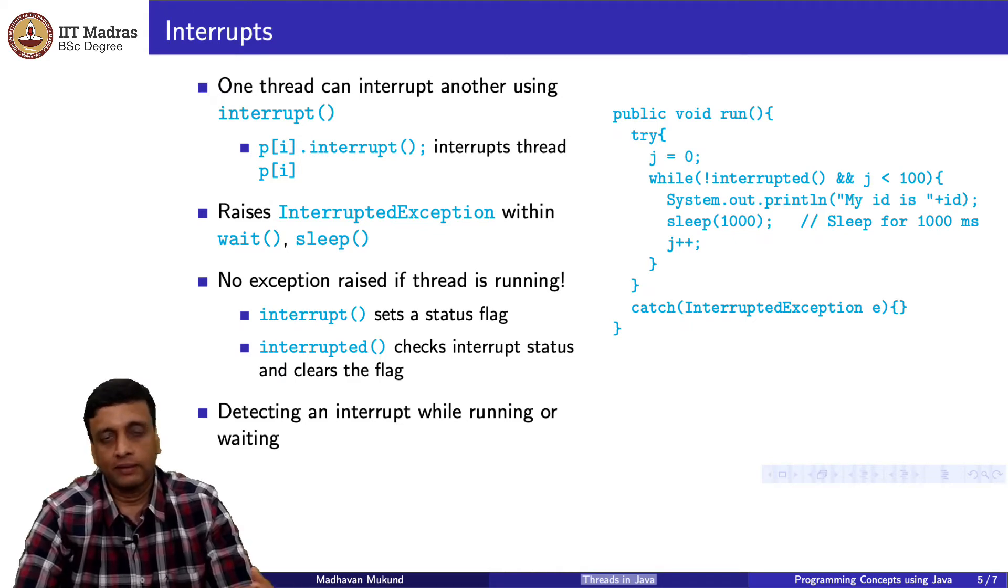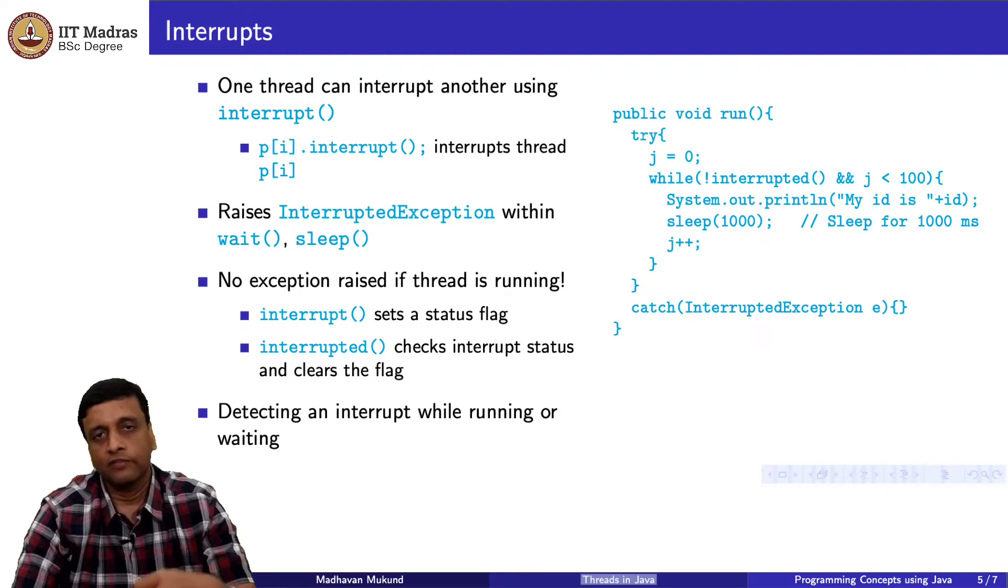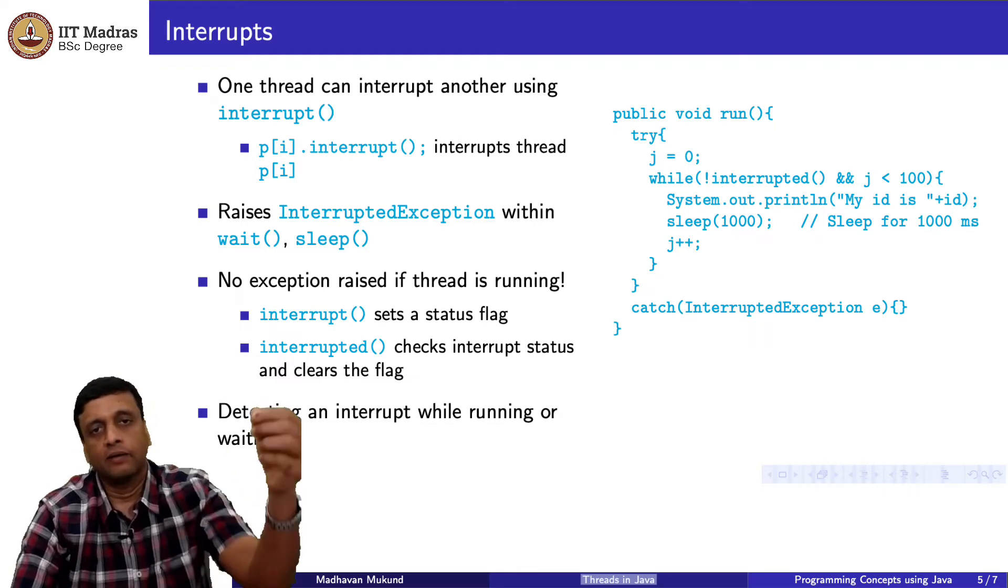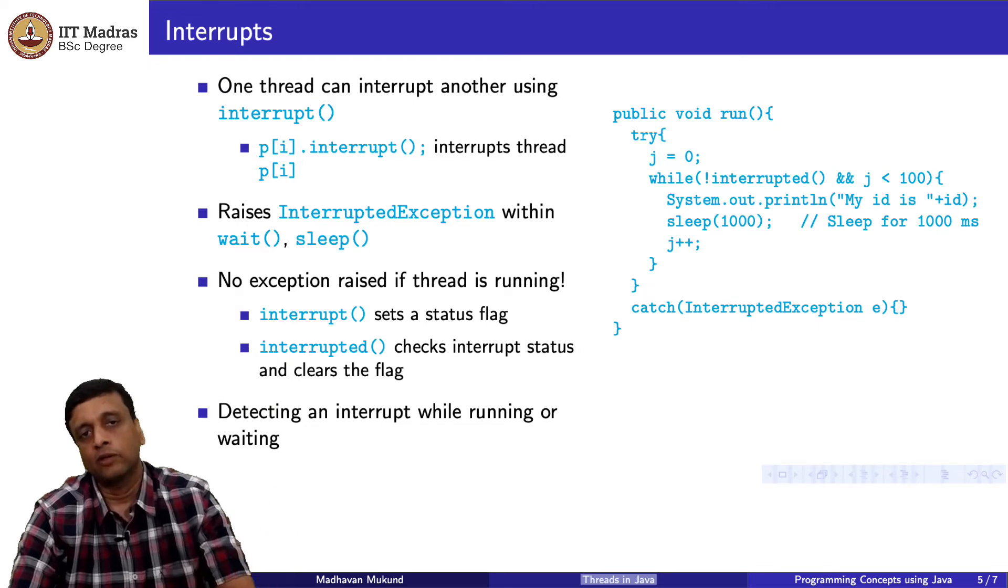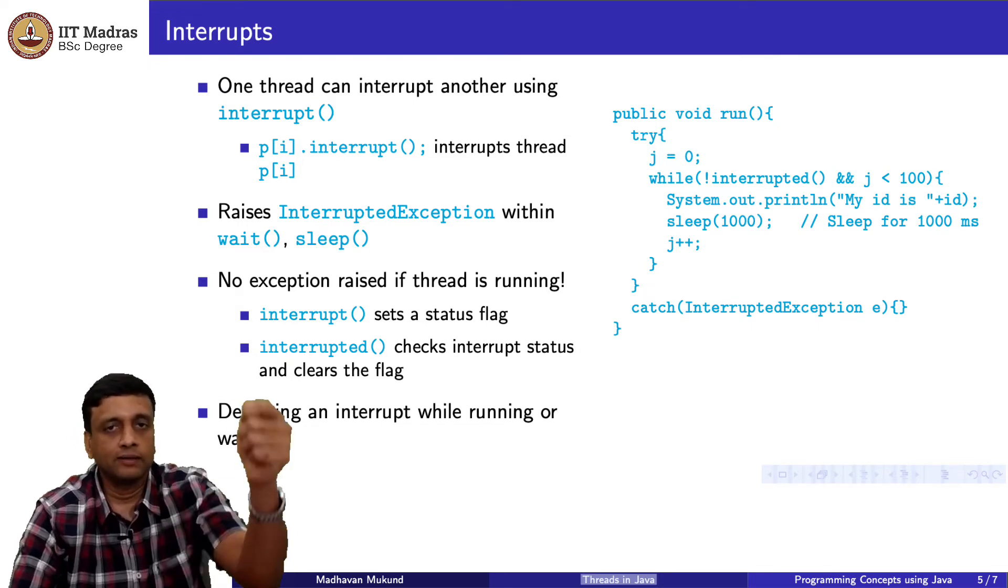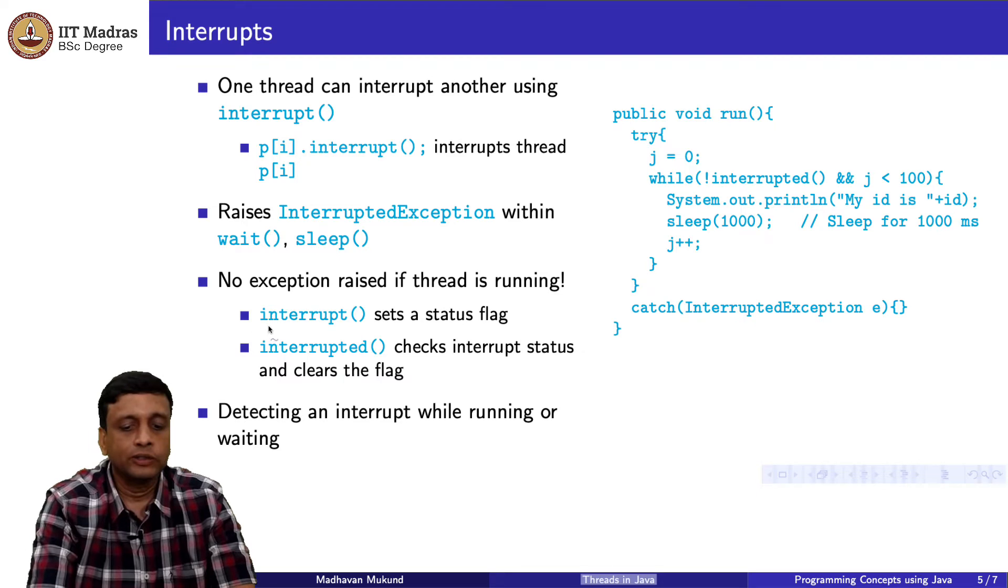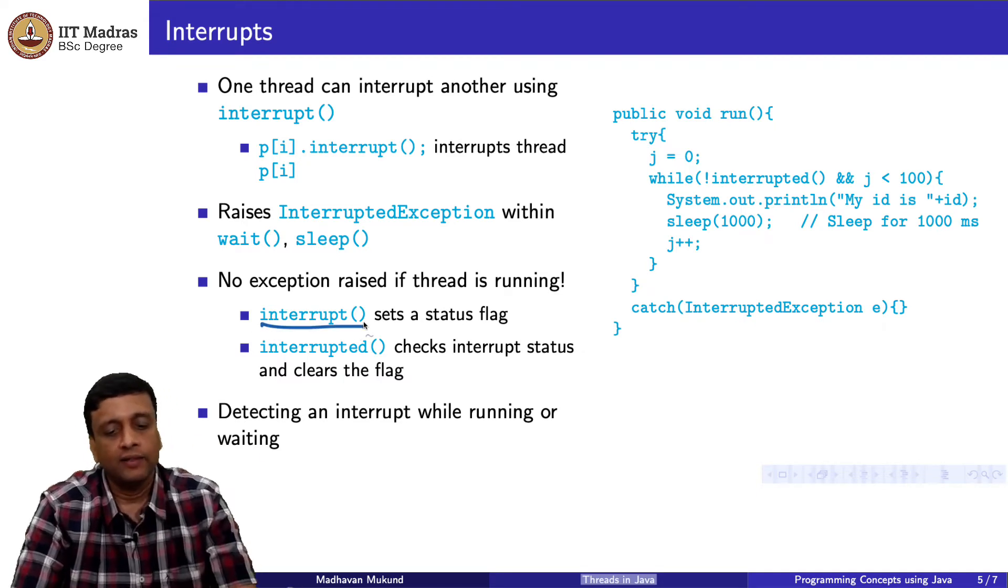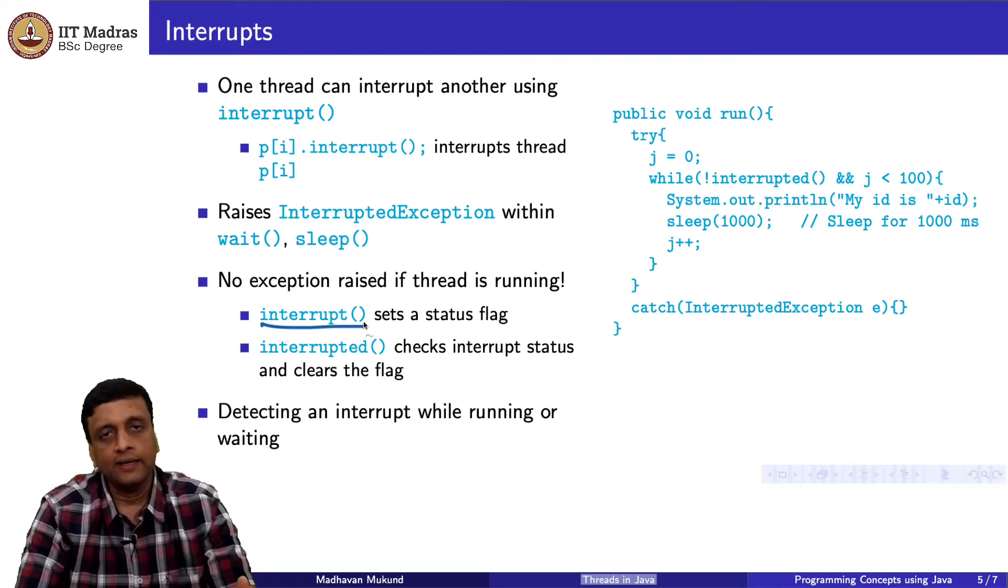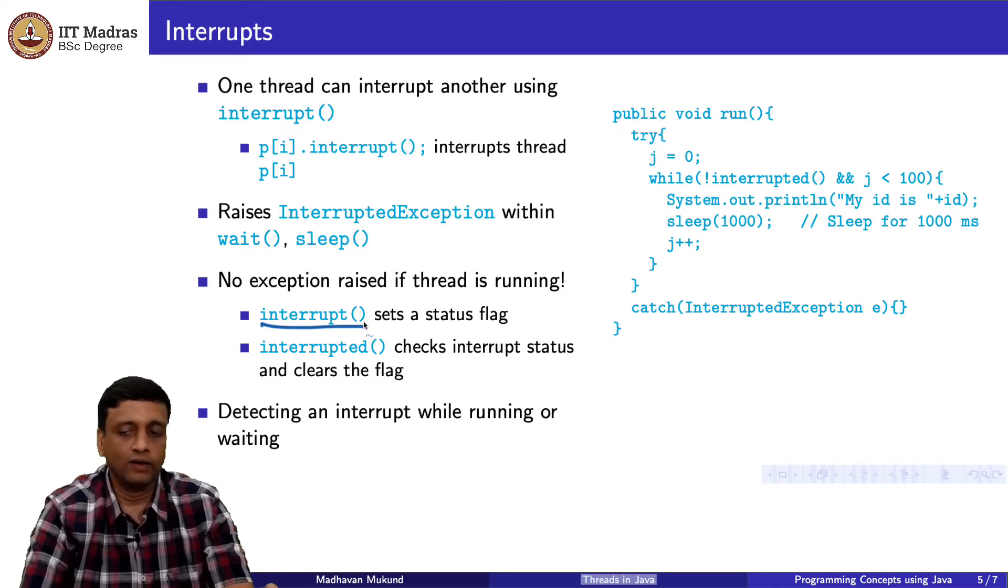But paradoxically, if it is running, if it is actually in a runnable state, then there is no interrupt exception. Then you actually have to check. And this is some kind of a flag, some kind of a signal flag. It is like somebody comes and pops up something on your object saying there is an interrupt. And now you have to go and look and see whether that flag is raised or not. There is a function. The interrupt function sets the flag and inside the thread, you can say interrupted to check the flag.